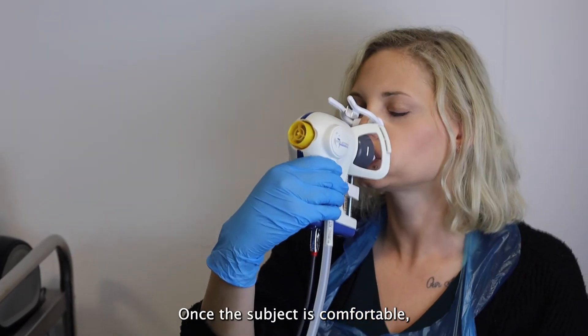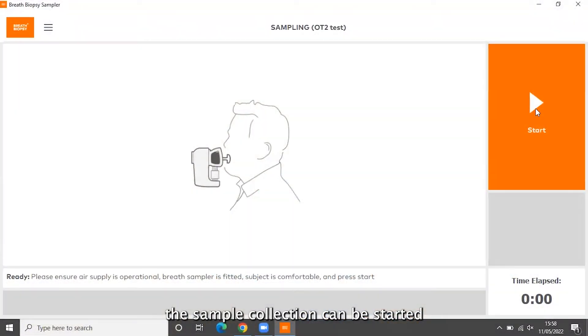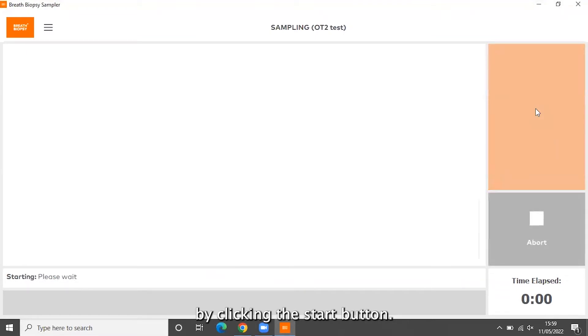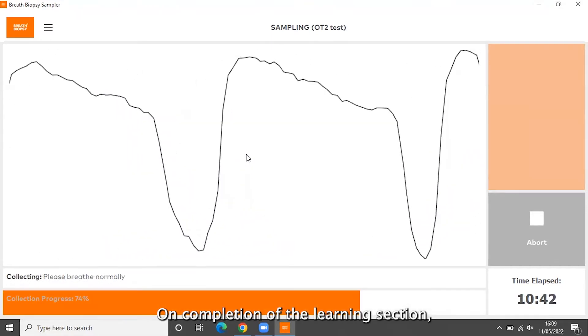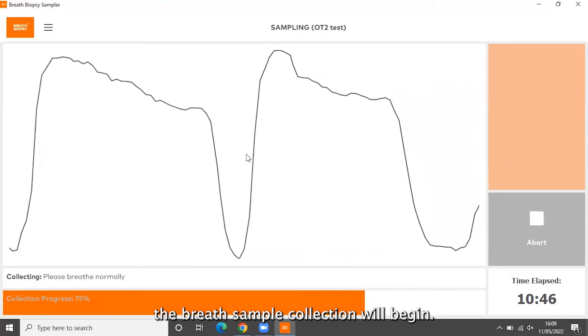Once the subject is comfortable, the sample collection can be started by clicking the start button. The software will then learn the subject's breathing pattern before starting the breath collection. On completion of the learning section, the breath sample collection will begin.